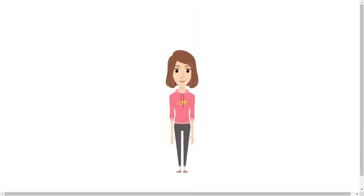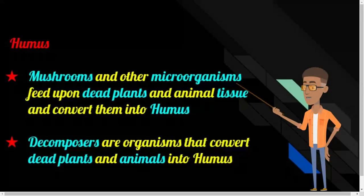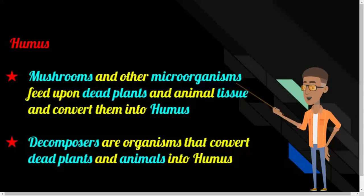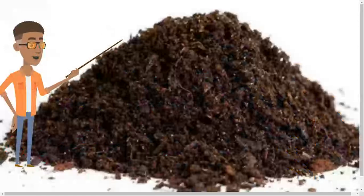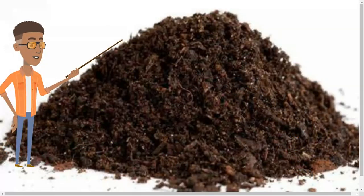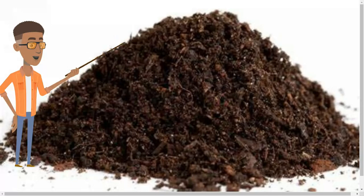Professor, what do mushrooms and other microorganisms eat? Mushrooms and other microorganisms feed upon dead plant and animal tissues and convert them into a dark colored substance called humus, which is present in the top layer of the soil. The microorganisms that convert dead plants and animals into humus are known as decomposers. The presence of humus ensures that the nutrients of dead plants and animals are released into the soil, and from the soil these nutrients are again absorbed by the roots of living plants.